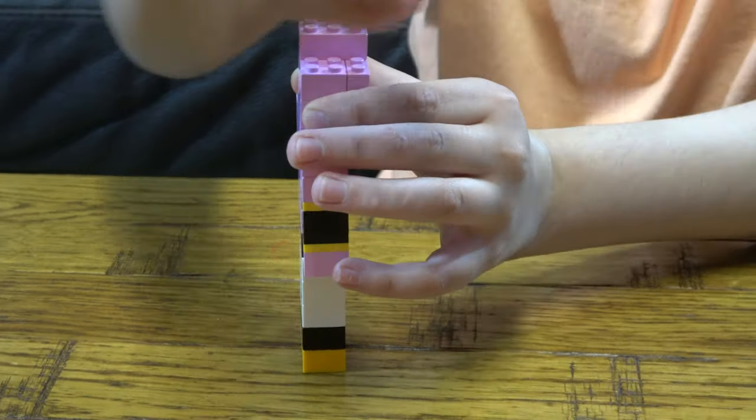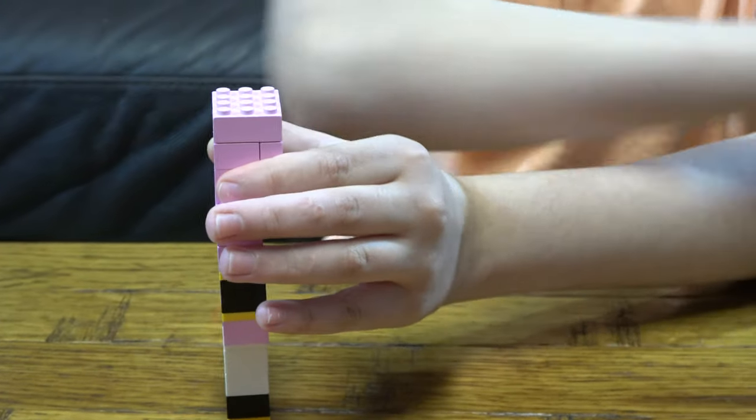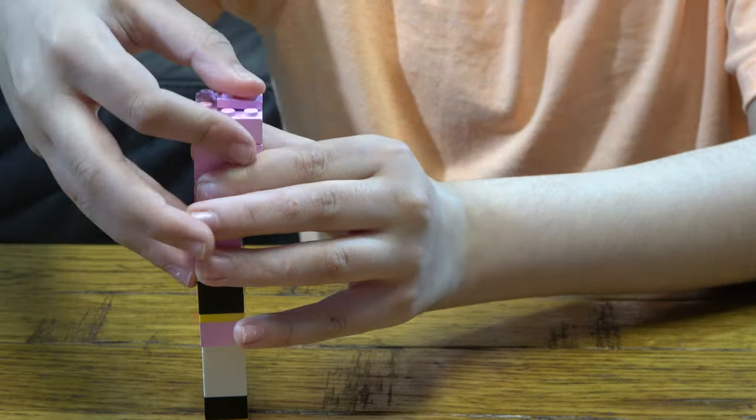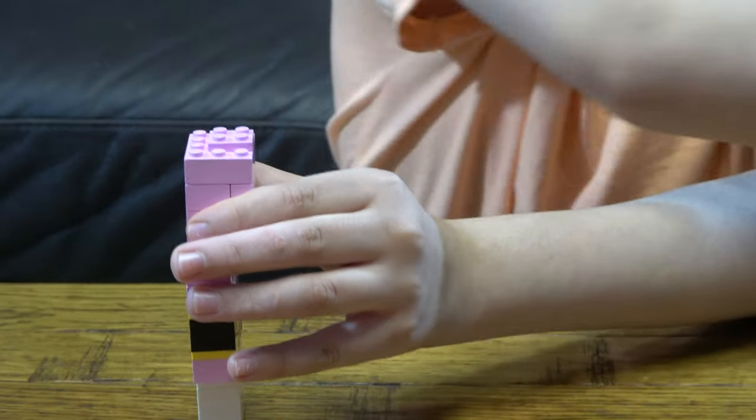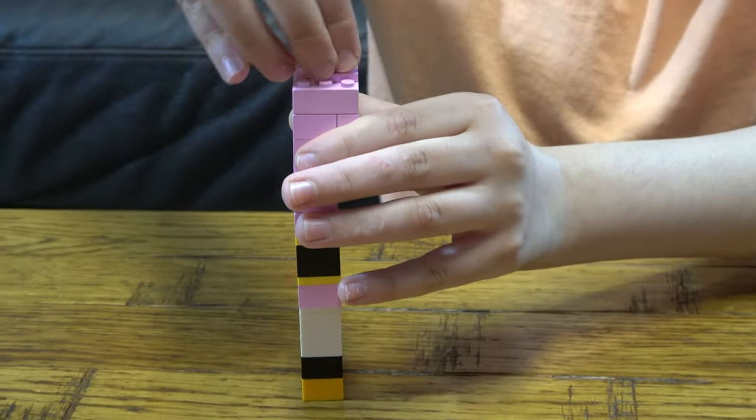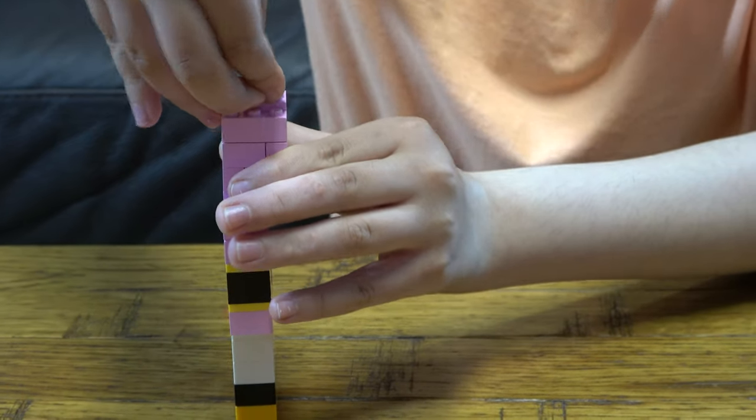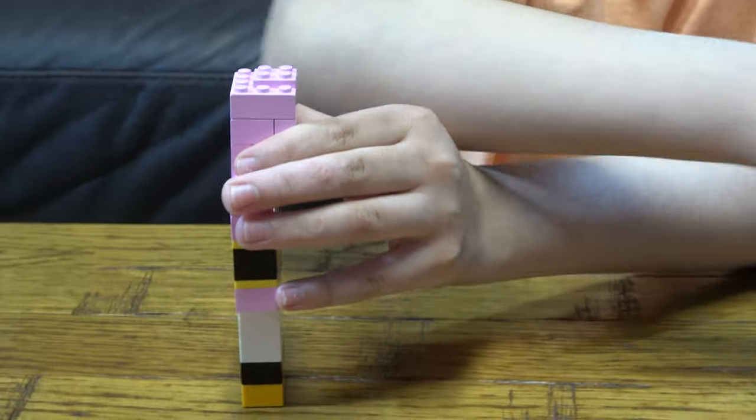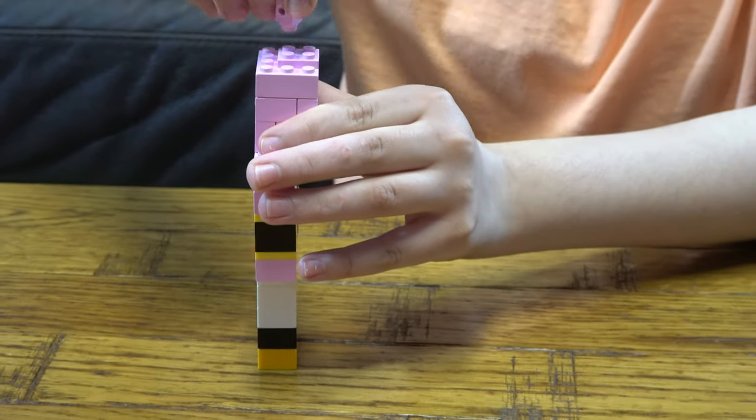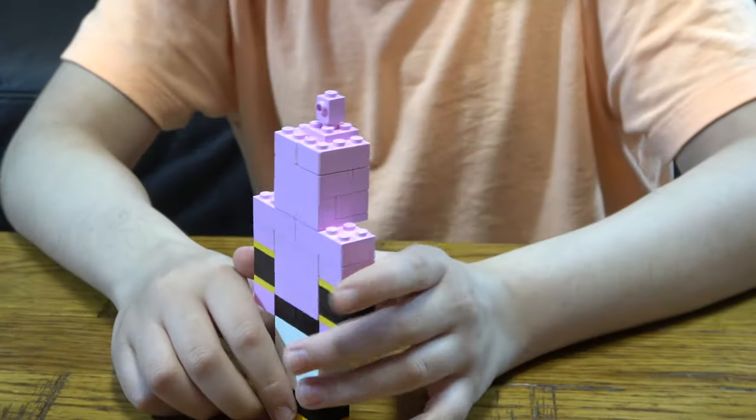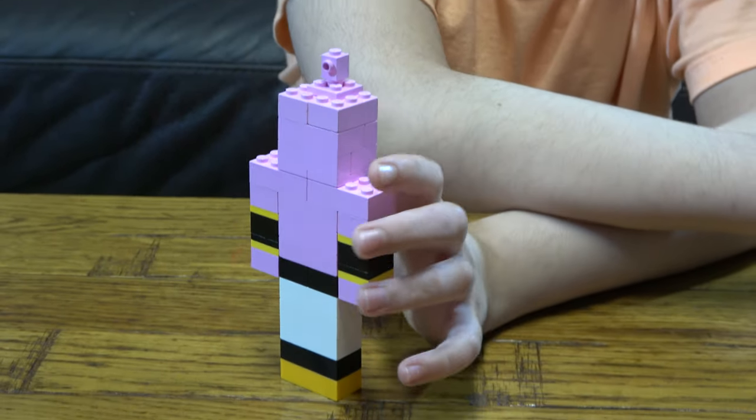Then, two of these on top, place this here. This onto here. We'll just place this on first, so then the stud can fit onto there.